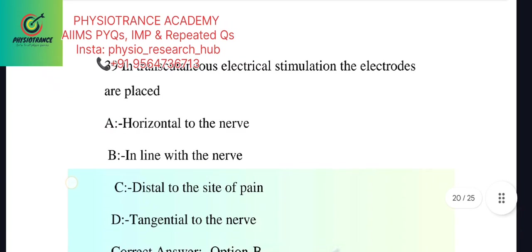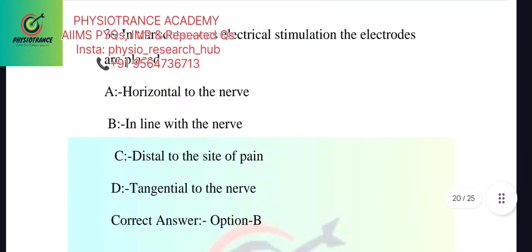First question: In transcutaneous electrical nerve stimulation, the electrodes are placed. Options: A - Horizontal to the nerve, B - In line with the nerve, C - Distal to the site of pain, D - Tangential to the nerve.